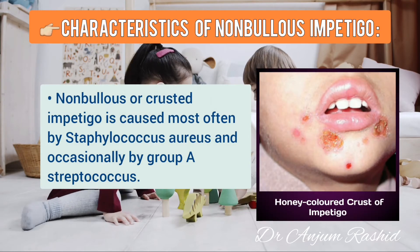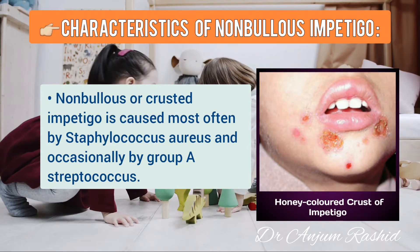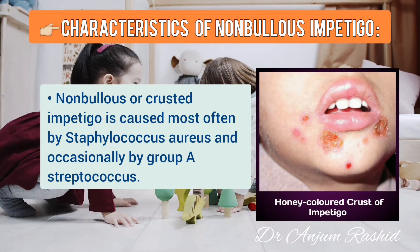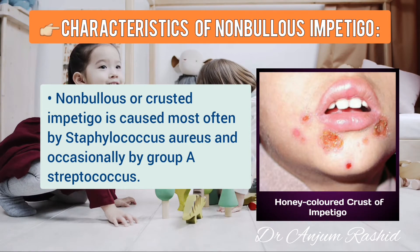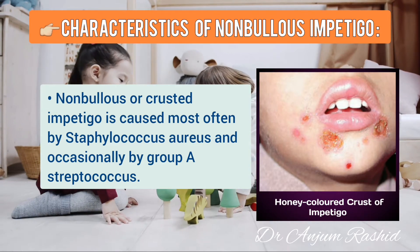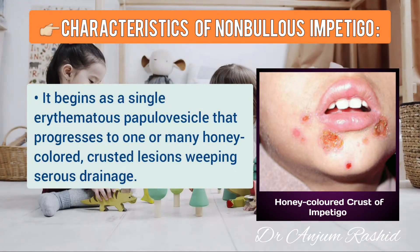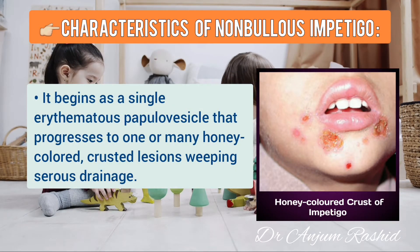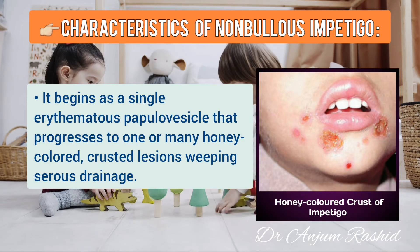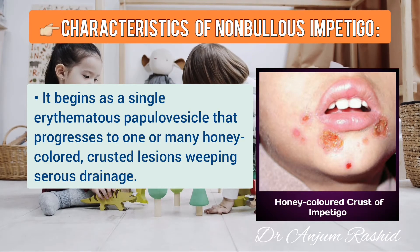Characteristics of the non-bullous or crusted impetigo: it is caused most often by Staphylococcus aureus and occasionally by group A streptococcus. It begins as a single erythematous papulovesicle that progresses to one or many honey-colored crusted lesions with weeping serous drainage.